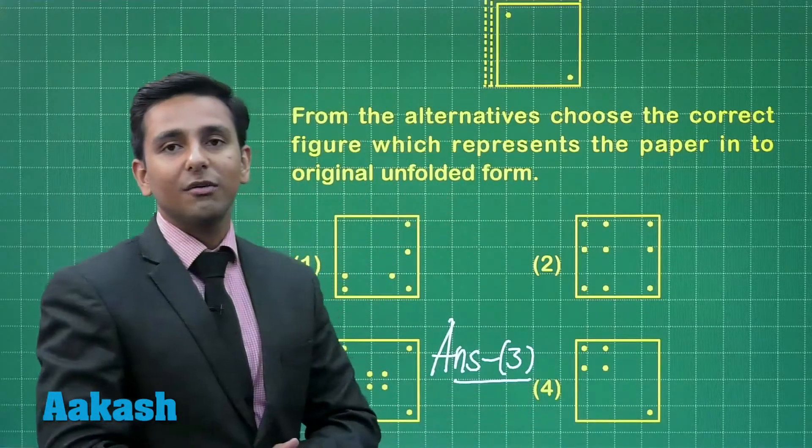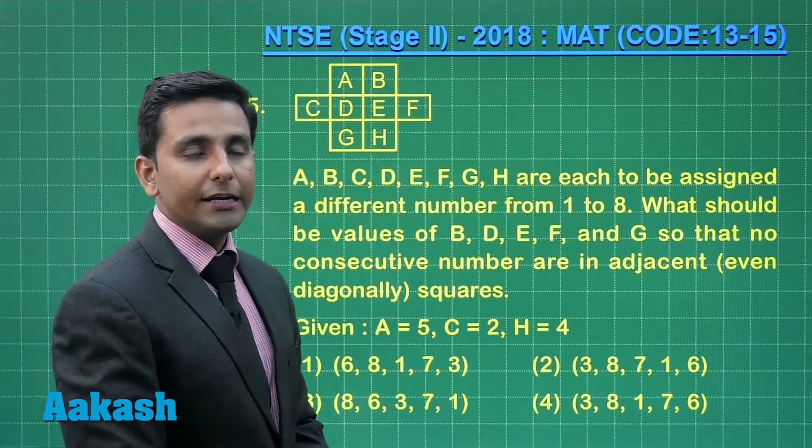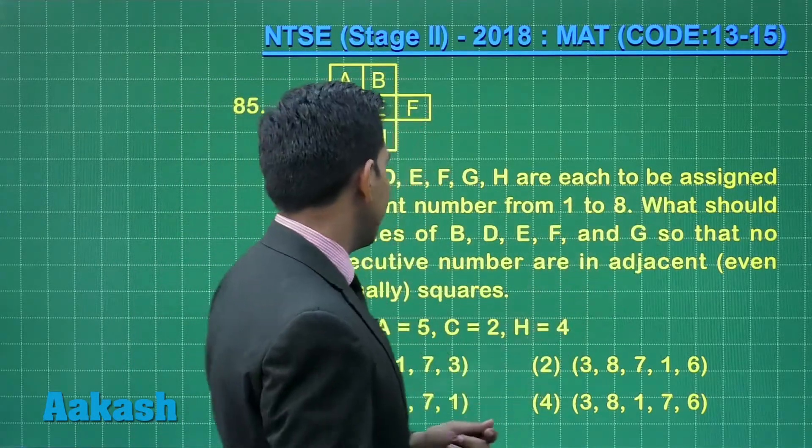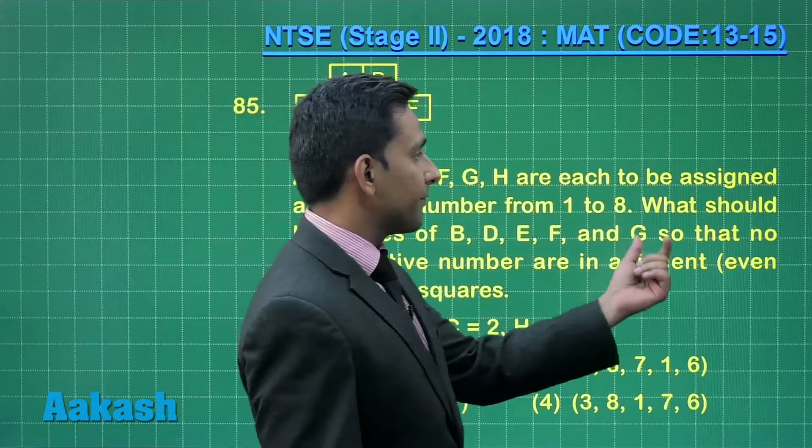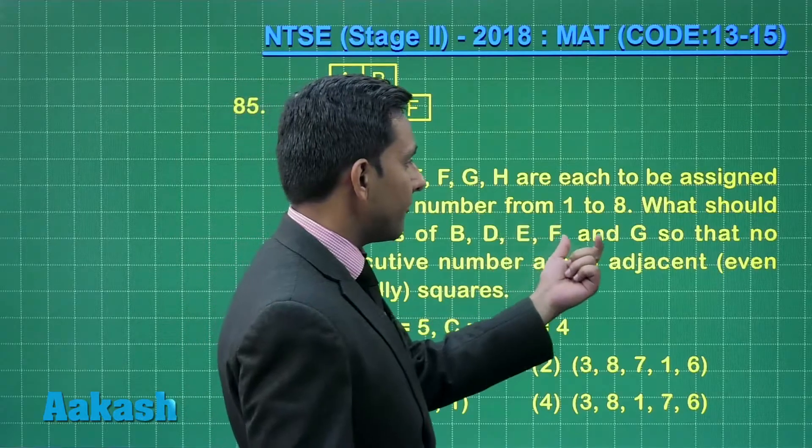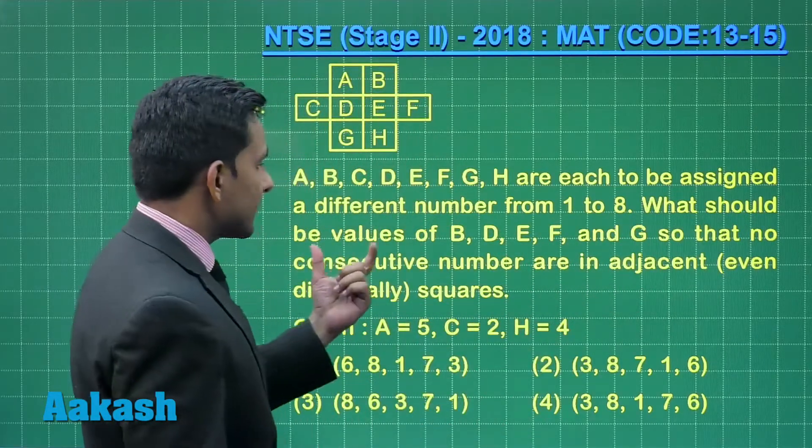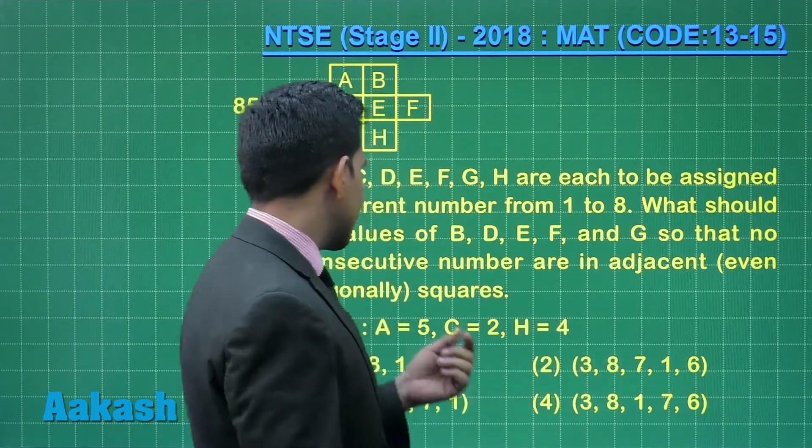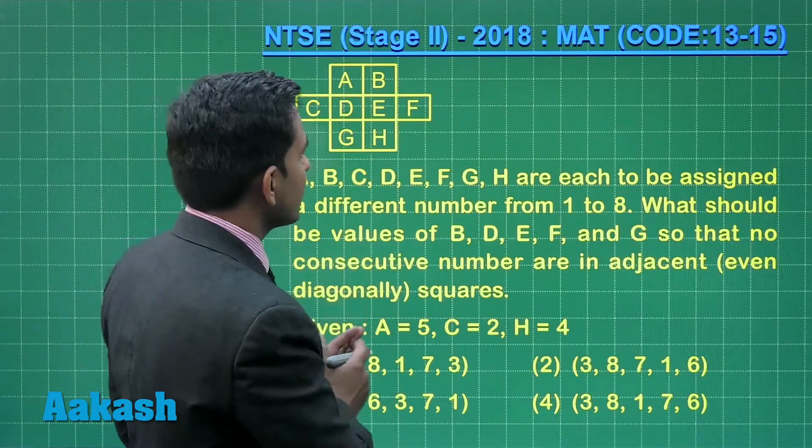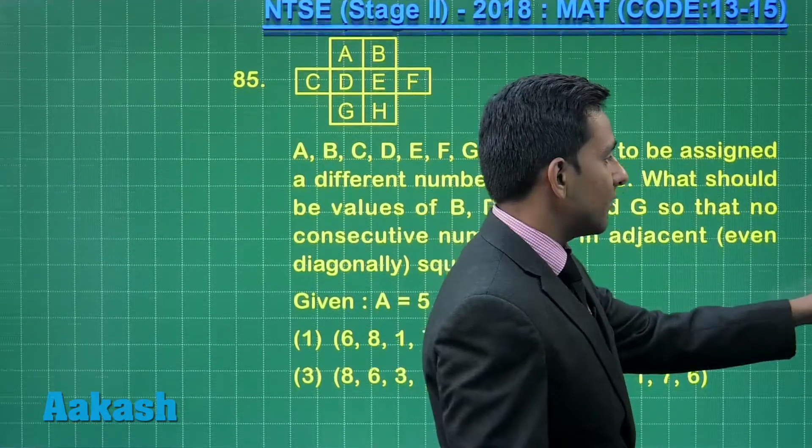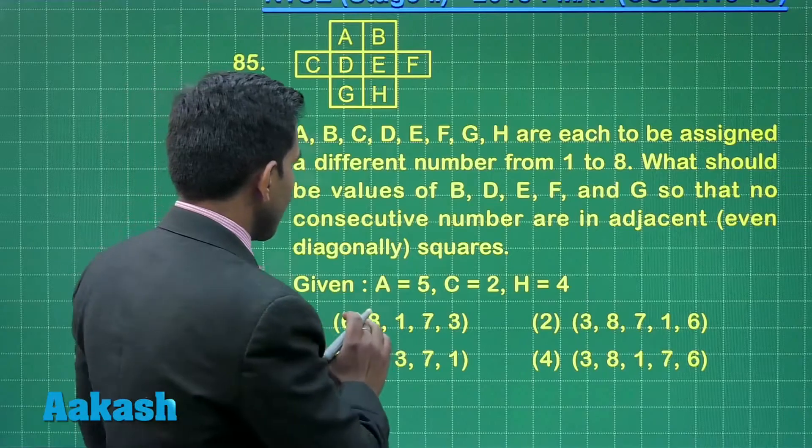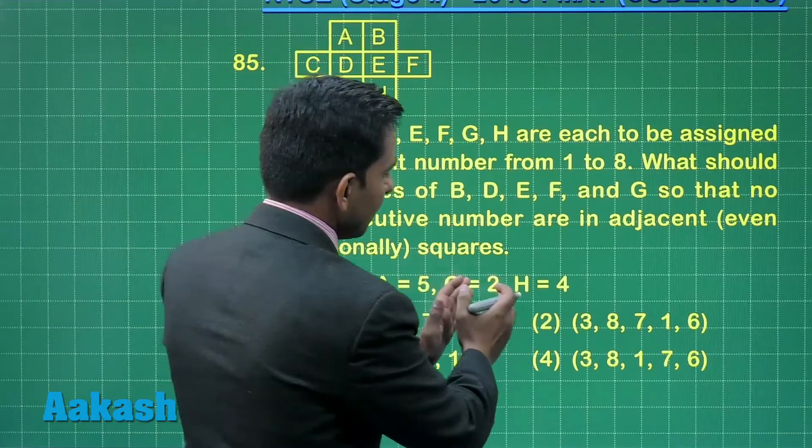Now let us move forward to question number 85. Let us take question number 85. A, B, C, D, E, F, G, H - 8 alphabets each to be assigned a different number from 1 to 8. What should be the value of B, D, E, F and G so that no consecutive numbers are in adjacent or you can say diagonally squares. So here we can see that we have the 8 different boxes from A to H and we have to assign the number from 1 to 8 on the given letters. So here we can see that the given letter A get 5, C get 2 and H get 4.